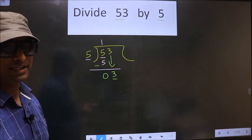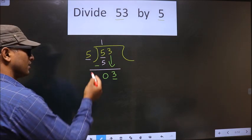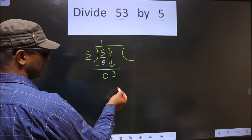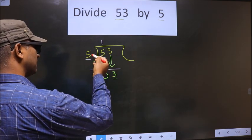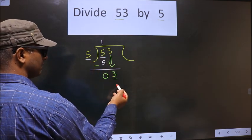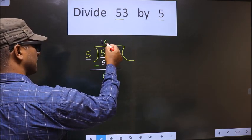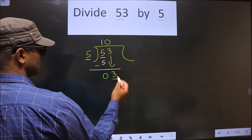Instead what you should think is, to this what should we multiply to get a number here? If I multiply by 1, I get 5 that is larger than this. So we should multiply by 0. So 5 into 0 is 0.